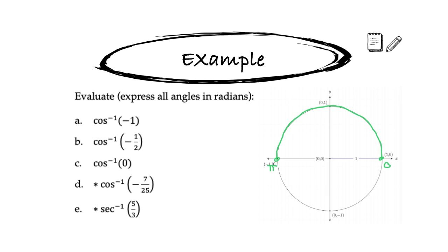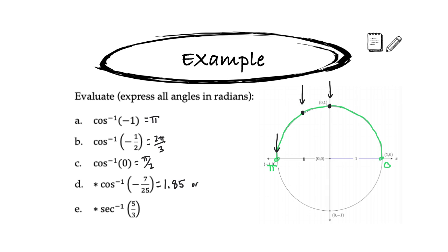To start, if we're asked to find inverse cosine of negative 1, we're asking for the angle at which cosine achieves a ratio of negative 1, and we can see that is pi. The second question asks for an angle where cosine achieves a ratio of negative one half, and knowing our unit circle tells us that is 2 pi over 3. We can also find an angle where cosine achieves the value of 0, and that is pi over 2. Some questions require a calculator: cosine inverse of negative 7/25 gives about 1.85 radians, or about 106 degrees in degree mode.